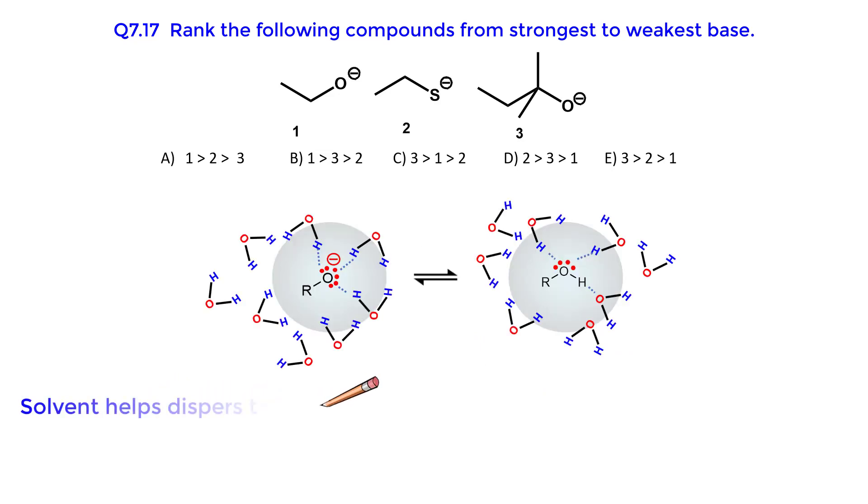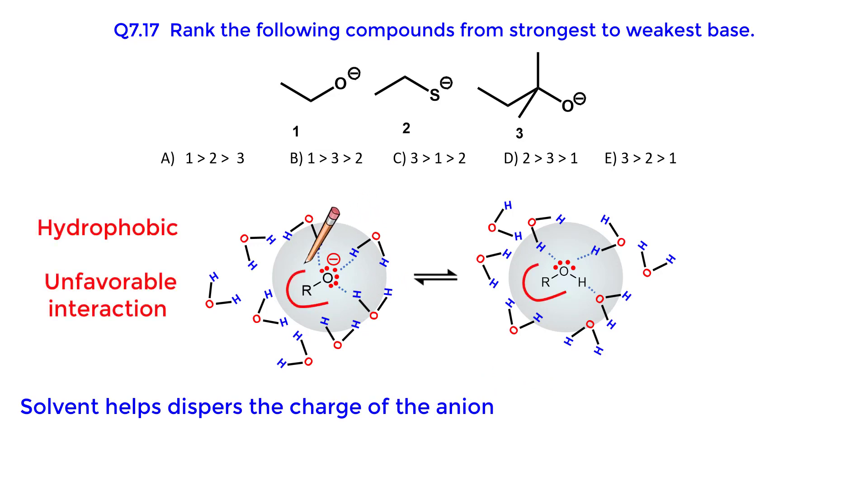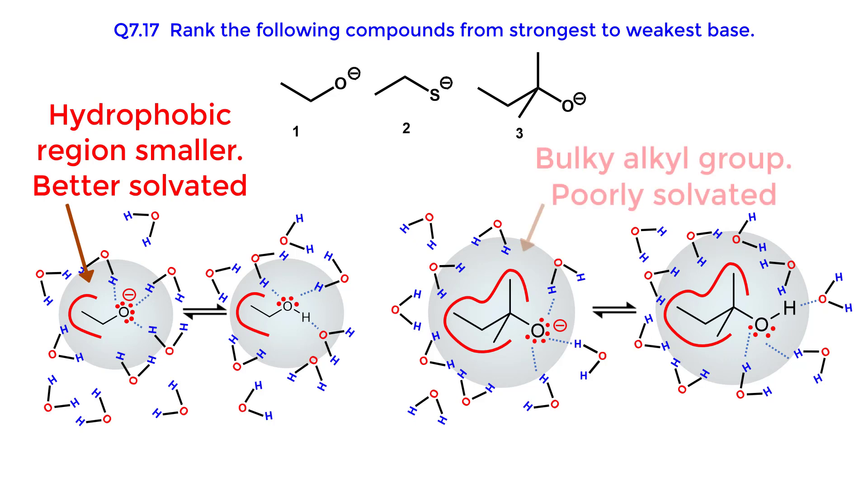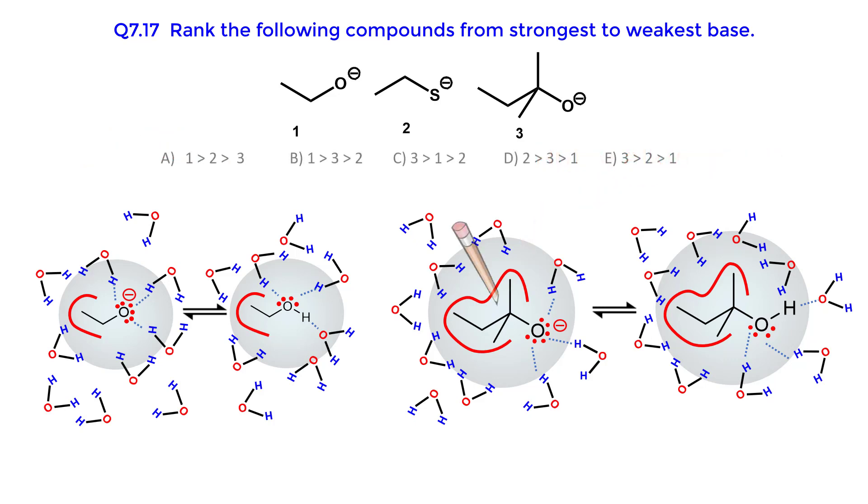The solvent helps to disperse the charge of the anions. If the base is poorly solvated by water due to unfavorable interactions with the solvent, then the equilibrium shifts to the products, making the compound more basic. Since the hydrophobic region of the ethoxide anion is smaller, it will be solvated to a greater extent than the bulky alkyl group of 2-methyl-butane-2-olate. 2-methyl-butane-2-olate is the less stable anion in the solvent, making it more reactive and the strongest base.